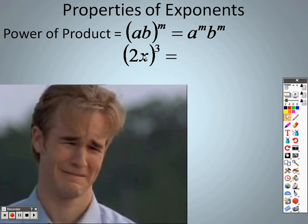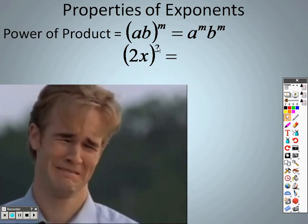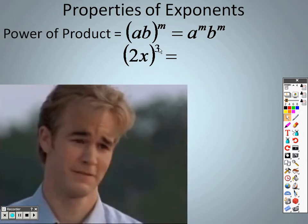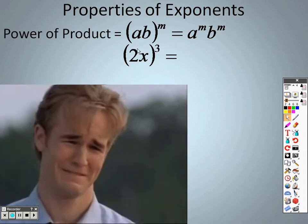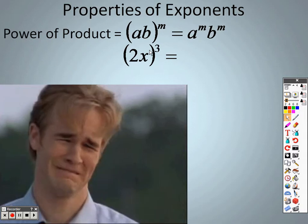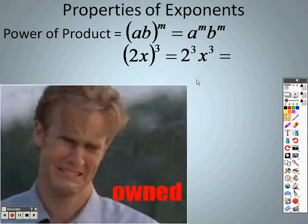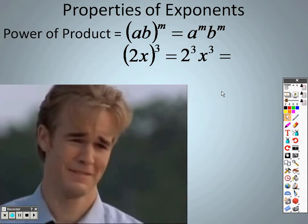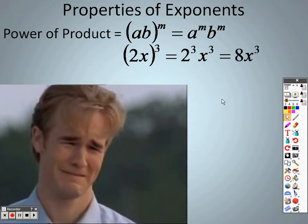So an example of that is, even though this is a 2, I still have to take this 3 through to both items. So I get 2 cubed, because 1 times 3 is 3. And here's a 1, 1 times 3 is 3. So I actually end up with 2 cubed x cubed. And 2 cubed, we actually know what that is. 2 cubed is 8, so I have 8x cubed.